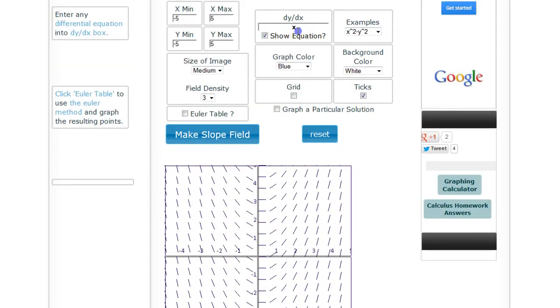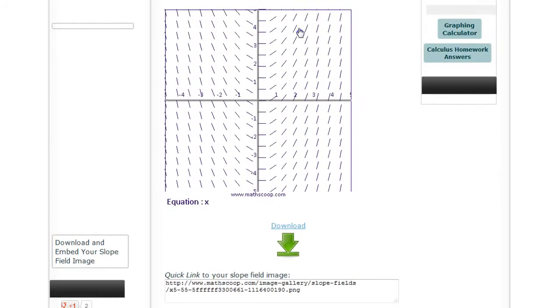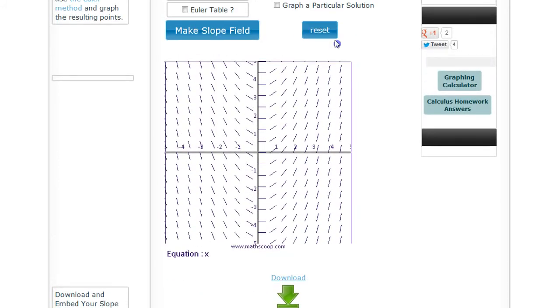Remember that we had the solution to this as, what was the solution to that? dy/dx equals x. It was a half x squared. These are showing the slopes of the solution curves without even solving the thing. All this does is everywhere that you set, it plots a little short line that shows the slope of what the solution curve would be.